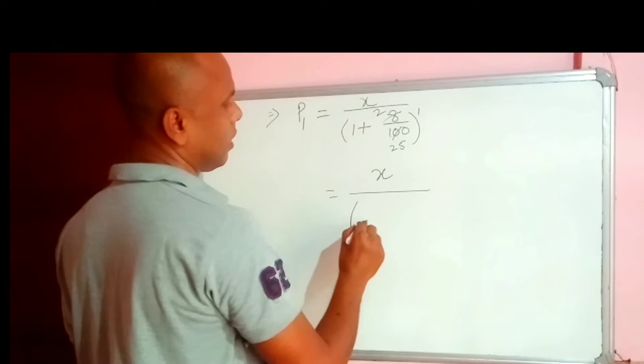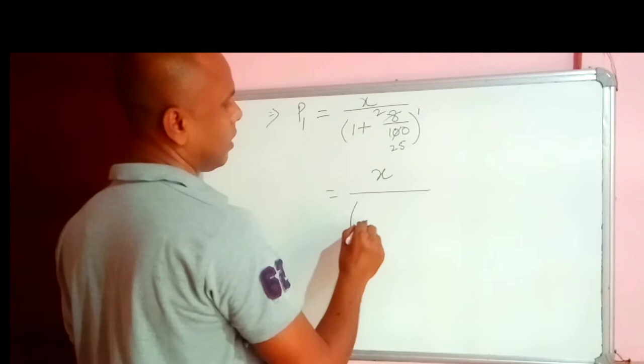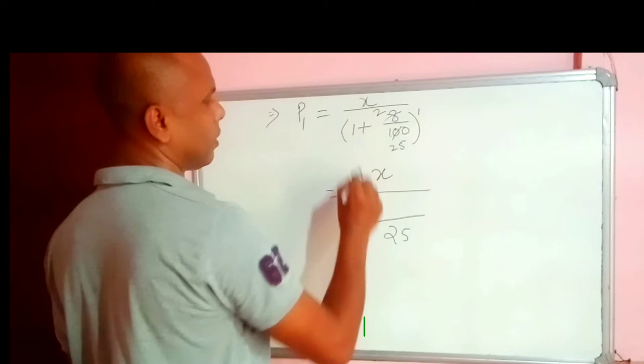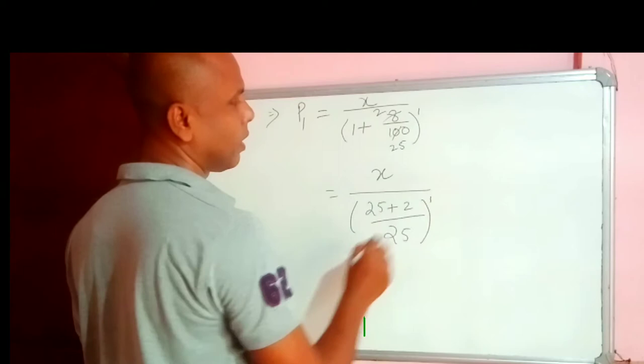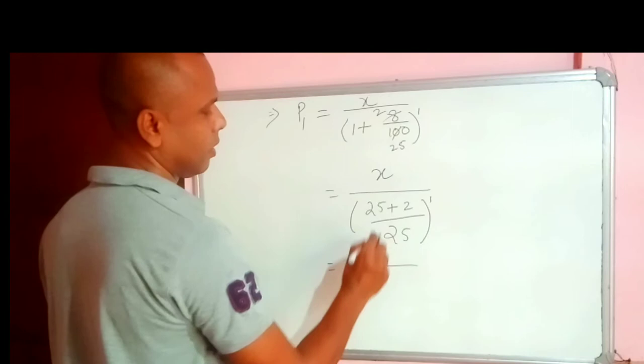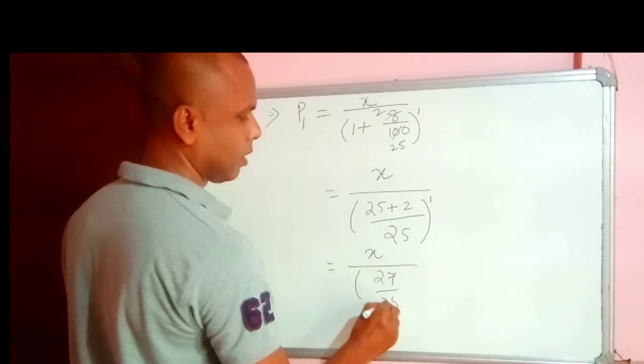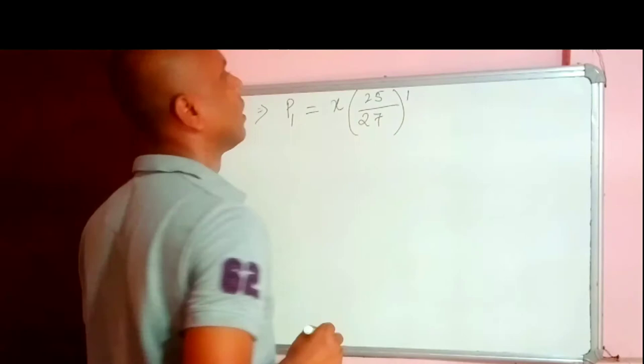So we have now here X, LCM we are going to take 25. 25 plus 1 to 25 plus 2 will retain the power, or X by 25 plus 2 is 27 by 25 power to the power 1, by 27 power to the power 1.